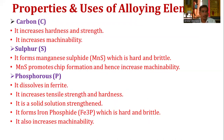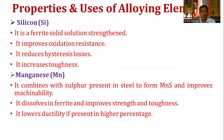Phosphorus (P) dissolves in ferrite and increases tensile strength and hardness; it is a solid solution strengthener. It forms iron phosphide (Fe3P), which is hard and brittle, and also increases machinability. Silicon is a ferrite solid solution strengthener that increases strengthening and improves oxidation resistance.